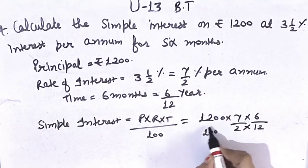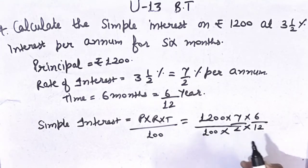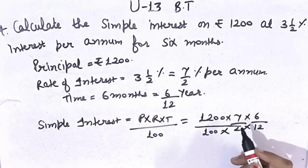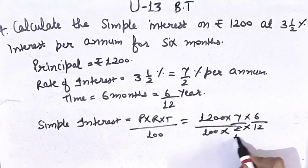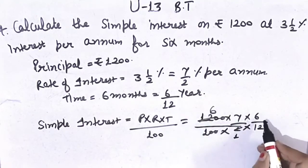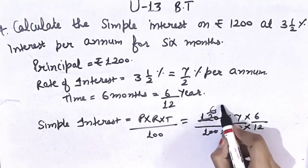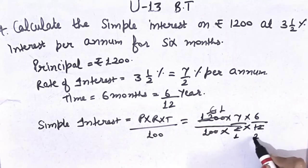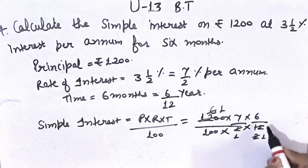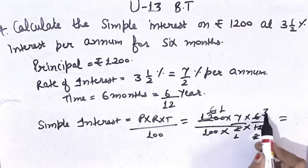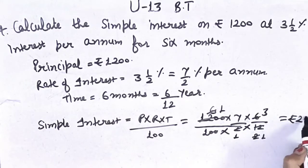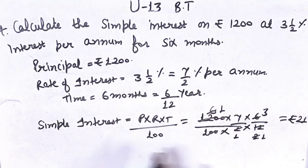Now find simple interest. Formula is principal × rate of interest × time ÷ 100. Principal is 1,200, rate of interest is 7 by 2, time is 6 by 12, divided by 100. Cancellation: 2 zeros cancel, 2 and 1 is 2, 2 and 6 is 12, 6 and 1 is 6, 6 and 2 is 12, 2 and 1 is 2, 2 and 3 is 6, 7 and 3 is 21. 21 divided by 1 is 21. Simple interest is Rs.21.